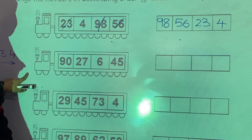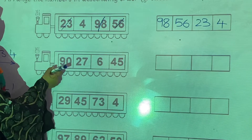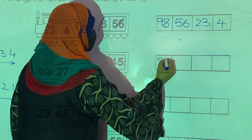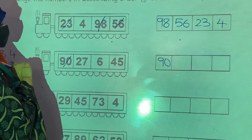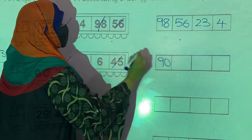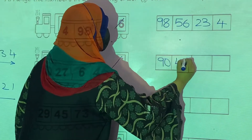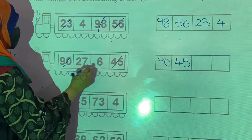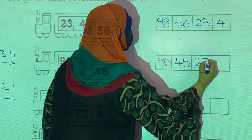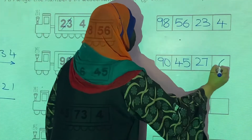Example number 2. Which one is the greatest number? 90. In the first box we write 90. After 90, which one is the greatest number? 45. In the second box we write 45. Then after 45, we write 27 in the third box. And the last number is 6.